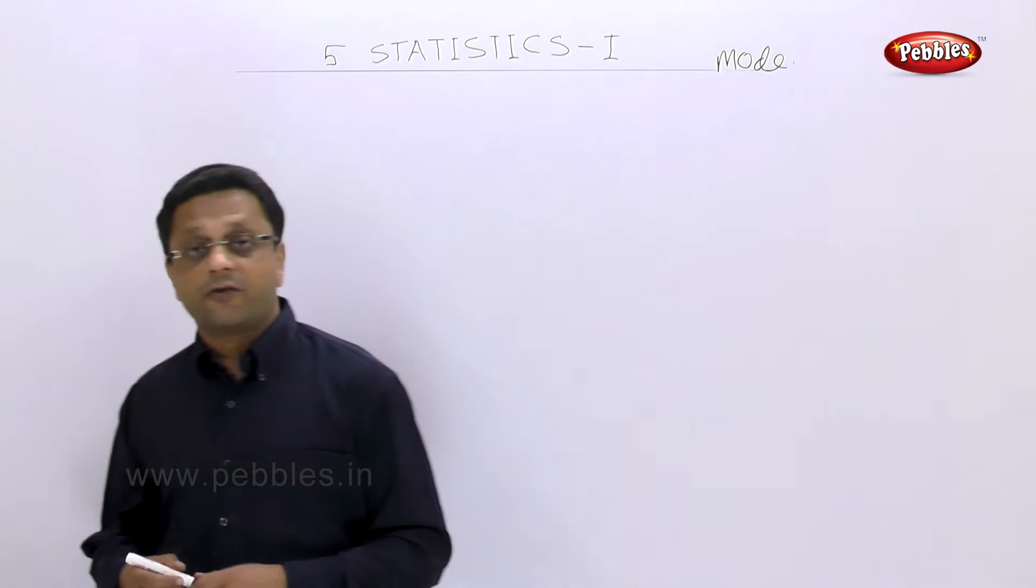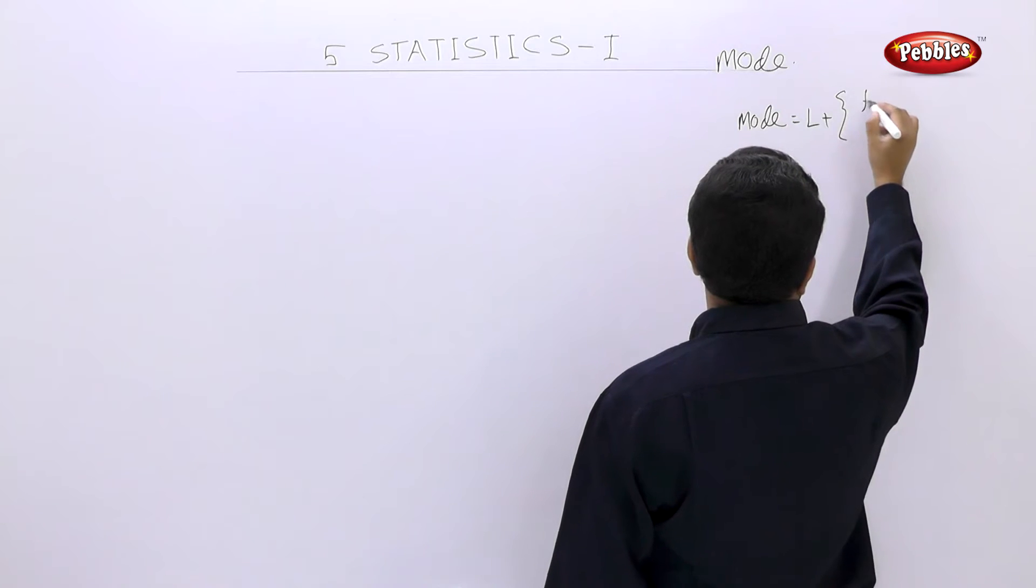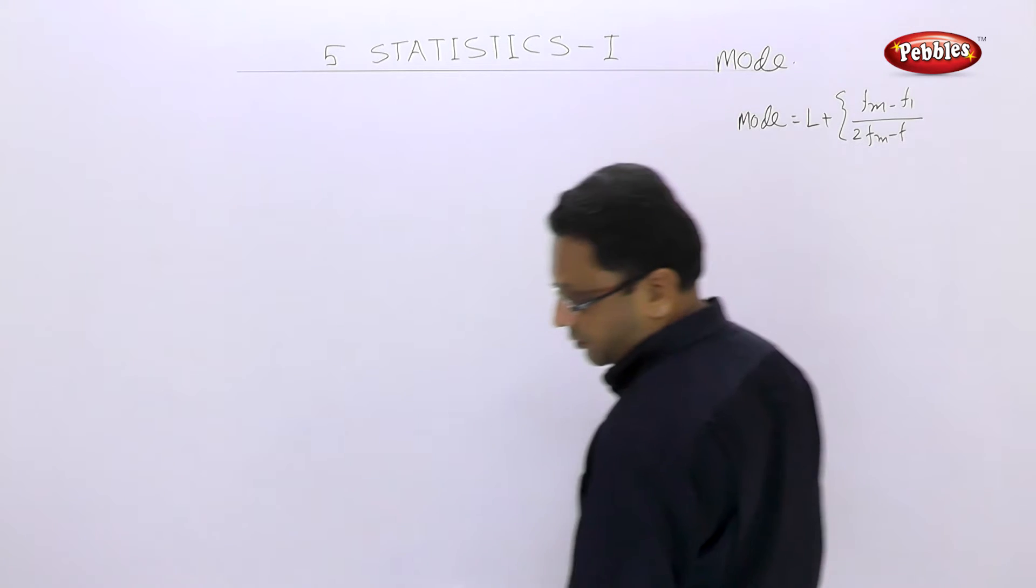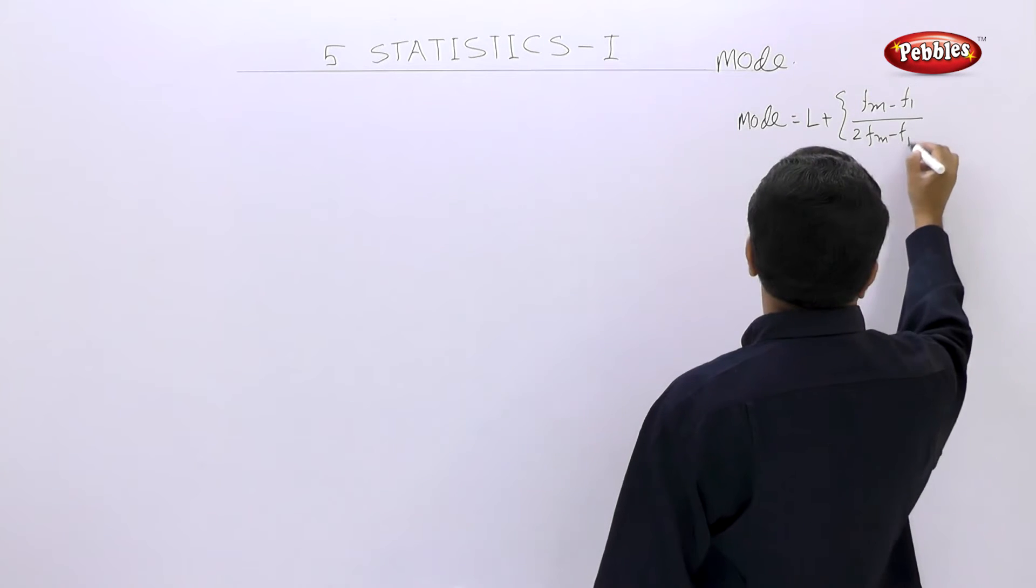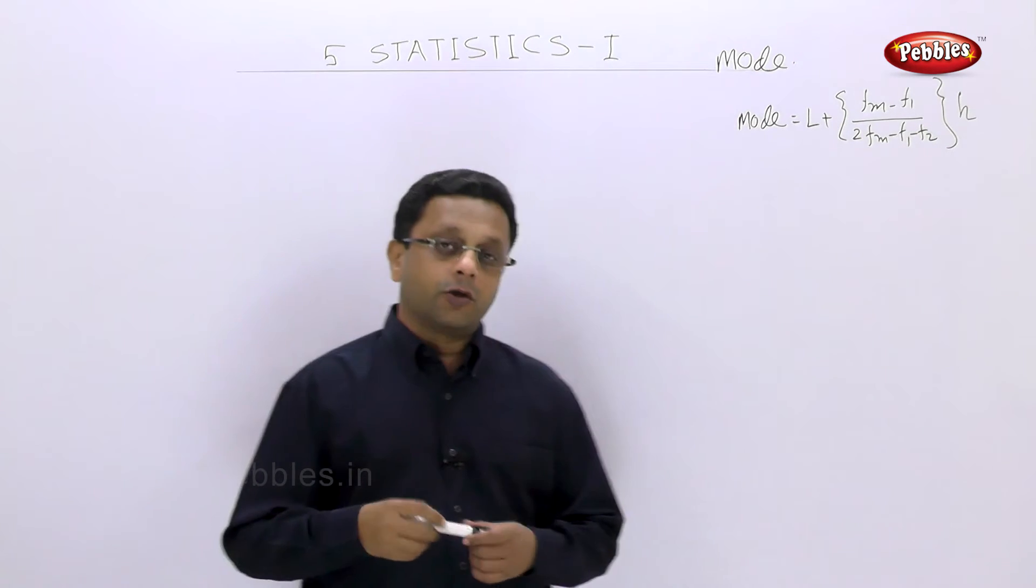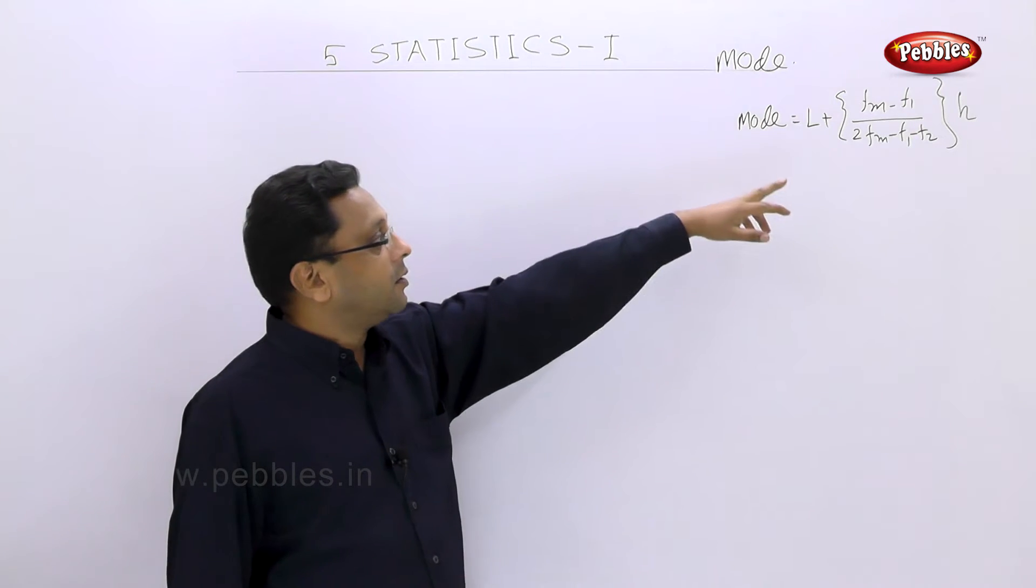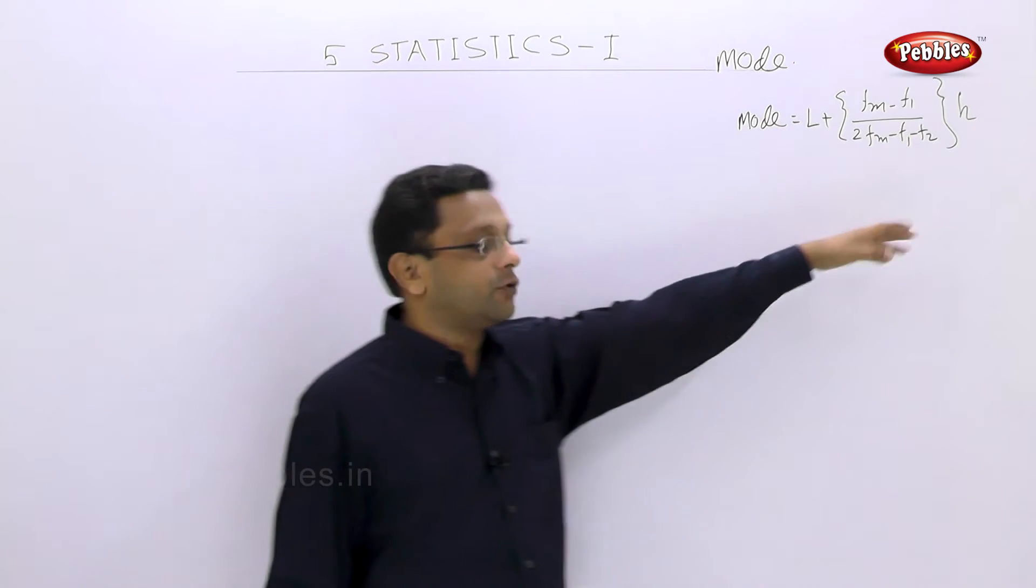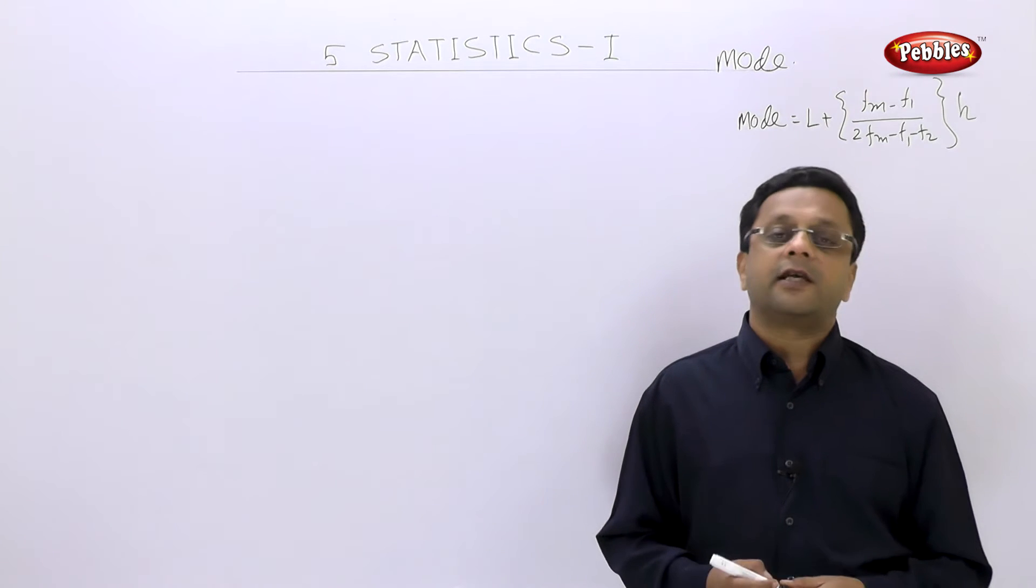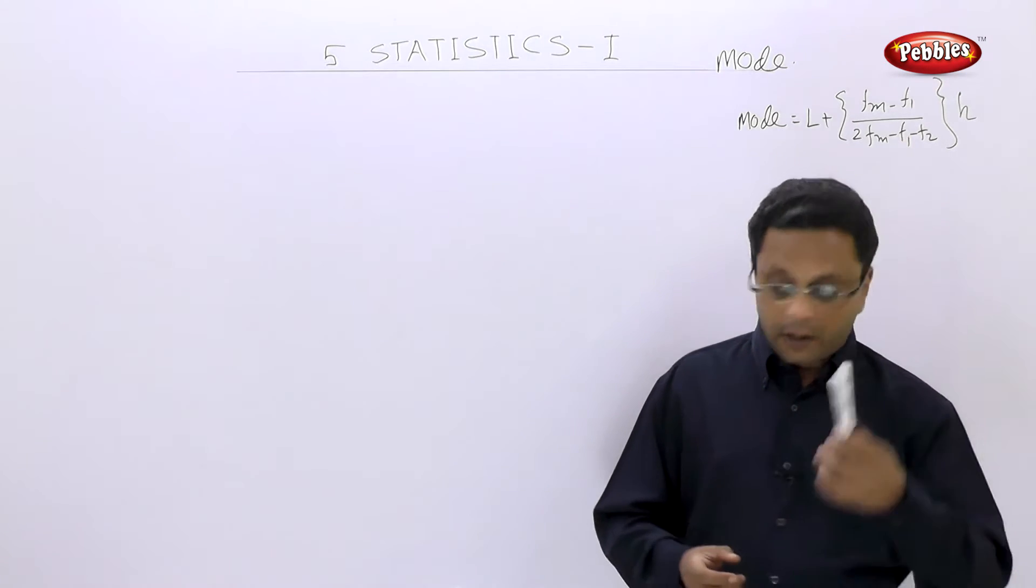So let us see first the formula for the mode. L plus fm minus f1 upon 2fm minus f1 minus f2 into h. So the formula for mode is L plus fm minus f1 upon 2fm minus f1 minus f2 multiplied by h. Let us see some solved examples so that we can understand this mode in better ways. Let us take first example.